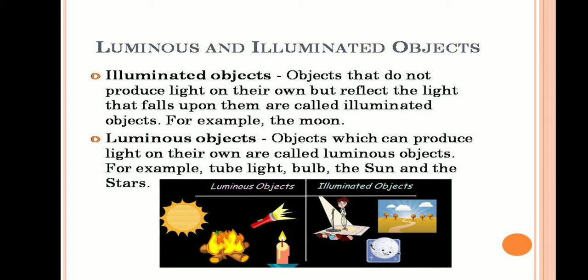An illuminated object reflects the light that falls upon it. For example, the moon. Even though the moon gives some light at night, it is not its own light — it is just reflecting the light from the sun. That is why the moon is an example of an illuminated object.